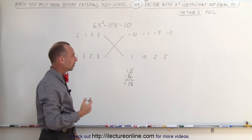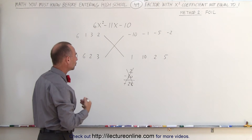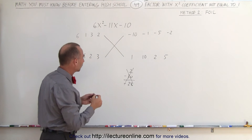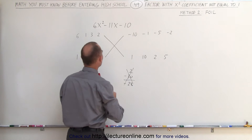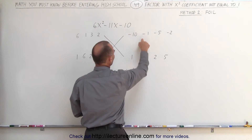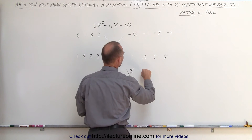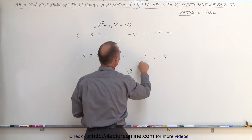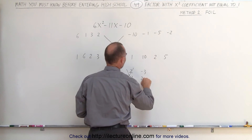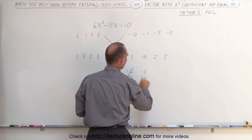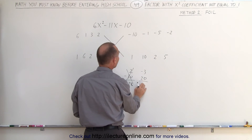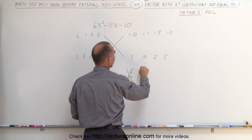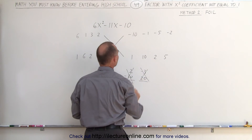In some cases you can see right away that you would not get a good combination. For example, 3 times negative 1, which is negative 3, and 2 times 10, which is positive 20. Notice when I add those together I get a positive number, which is not negative 11, so that doesn't count either.